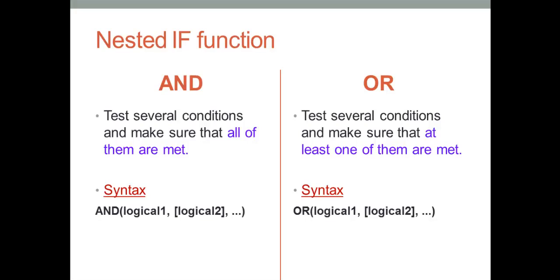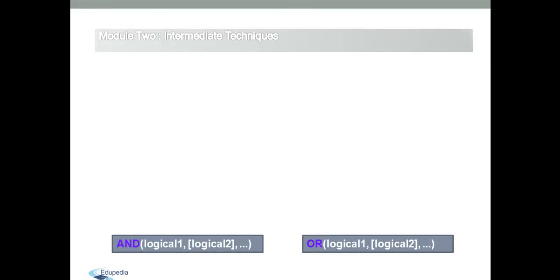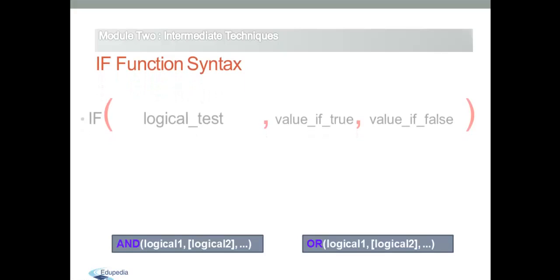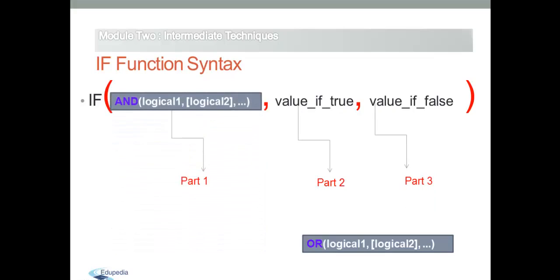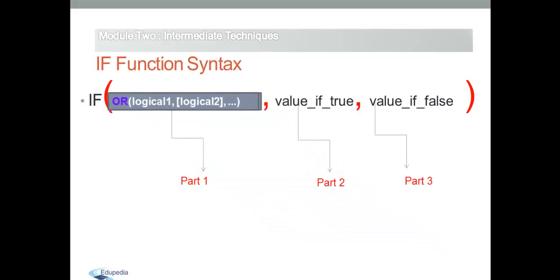Now let's see how to combine these logical functions with the IF function. As mentioned in our lessons, IF has three major parts: part one is the logical test, part two is the value if true, part three is the value if false. AND and OR functions are placed in the logical test section of the IF function to test several conditions instead of just one.